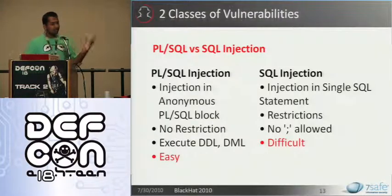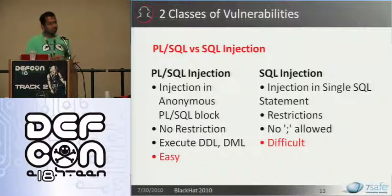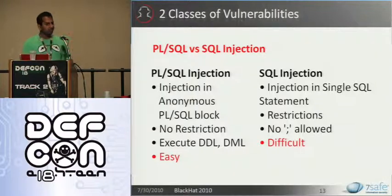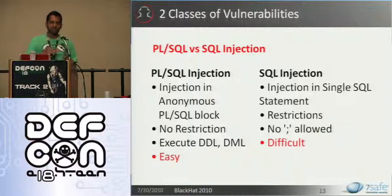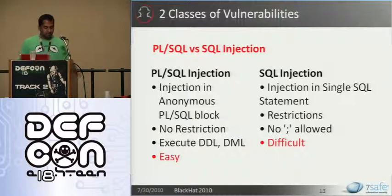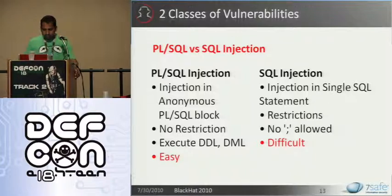Based on Oracle's two coding languages, you can have two classes of vulnerabilities: a PLSQL injection vulnerability or a SQL injection vulnerability. A PLSQL injection is when the user's input is used in the construction of an anonymous PLSQL block, and then that block gets dynamically executed. If you find a PLSQL injection, it's nothing different from having interactive access to the database, because you can run multiple statements. However, you can also have a SQL injection — injection in a single SQL statement. In that case, there are restrictions: no semicolon is allowed and you cannot use nested queries.